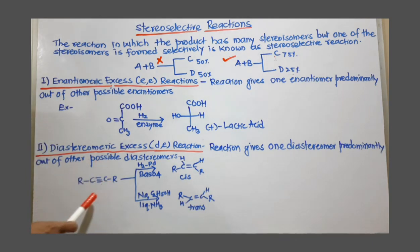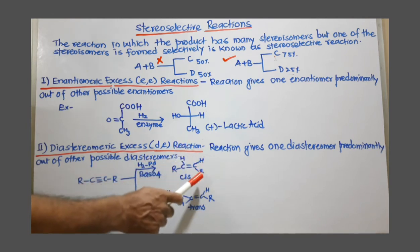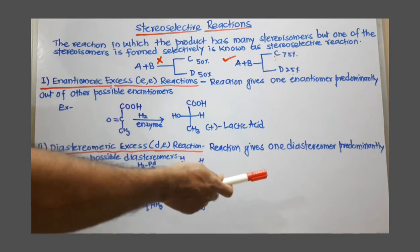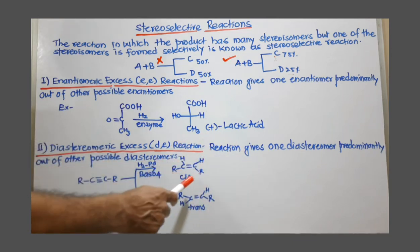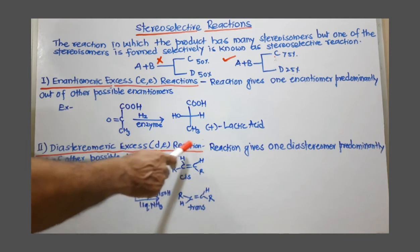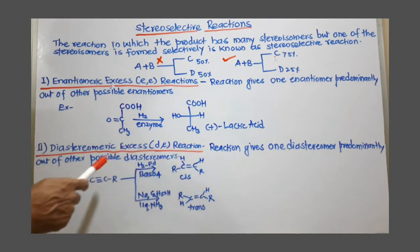For example, this alkyne, the reduction with H2, Pd-BaSO4 over Lindlar catalyst gives cis alkene. Trans is possible, but cis is given. Cis is selected. Cis is formed predominantly. So this is a diastereoselective reaction.